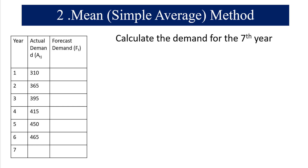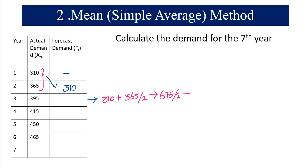At the first level we do not have previous data, so I'm marking this as empty. For the second year I'm going to take the previous year's demand, similar to the naive method — 310 for the second year. For the third year we consider the previous two years' data: 310 plus 365 divided by 2, which gives us 675 divided by 2, equal to 337.5.